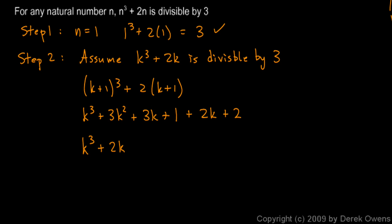And then what are the other terms we have left? We've just written the k cubed and the 2k. So we still have a plus 3k squared and a plus 3k. And then this 1 and this 2 combine to give me a plus 3.